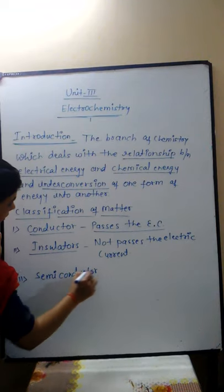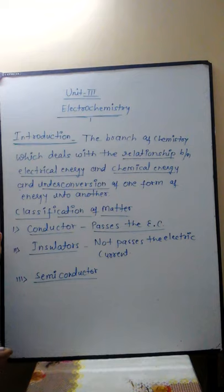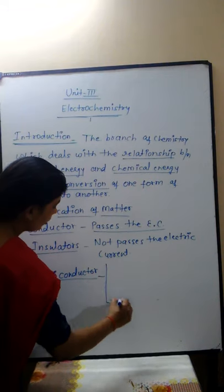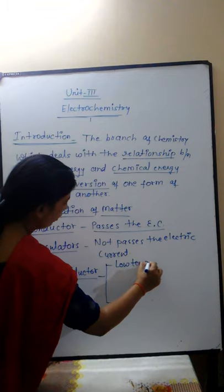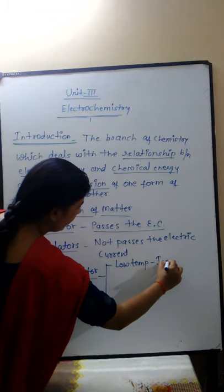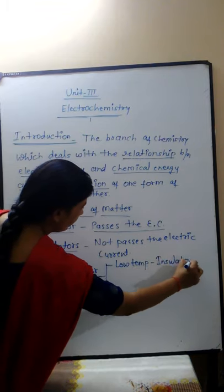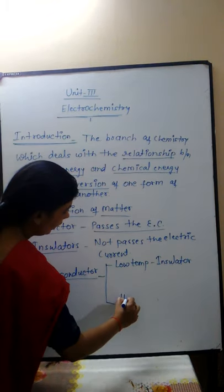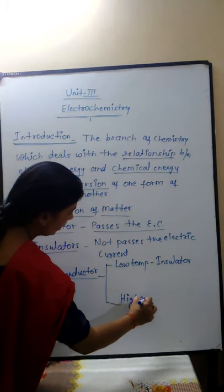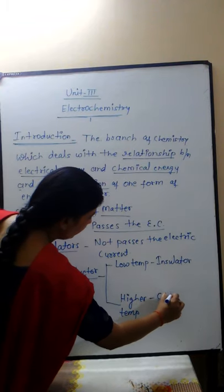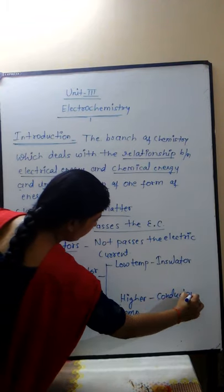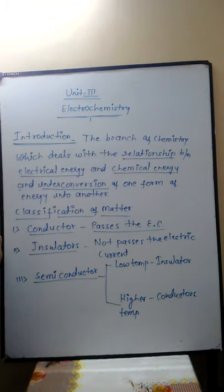Third is semiconductor. Semiconductors are the intermediate between conductors and insulators. At low temperature, semiconductors behave as an insulator — they do not pass electric current — but if we raise the temperature, they behave as conductors. Such substances are known as semiconductors.